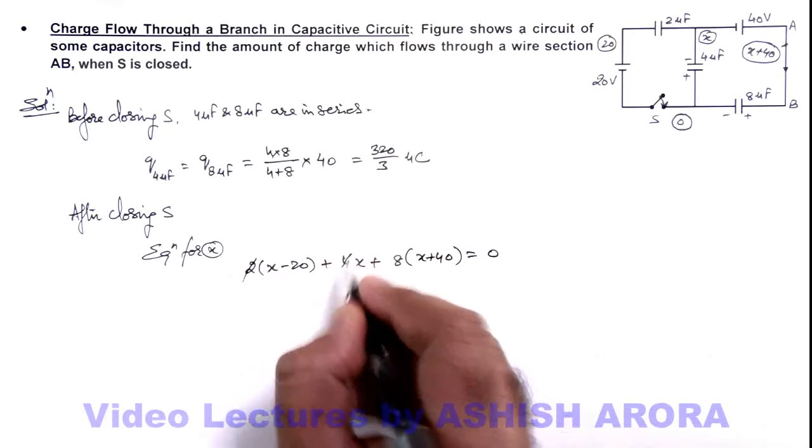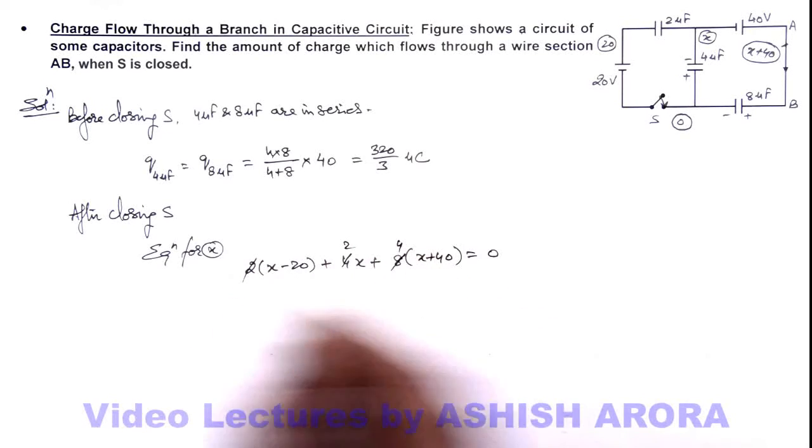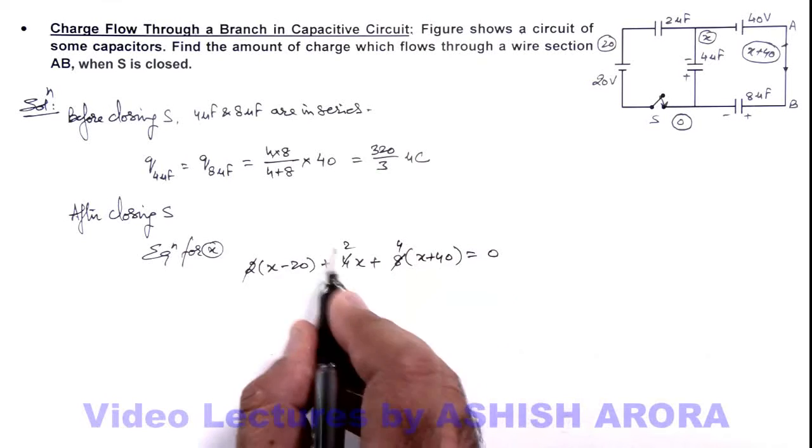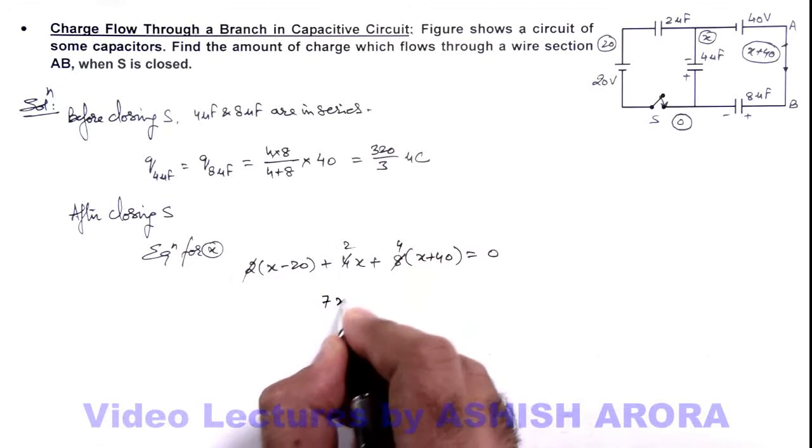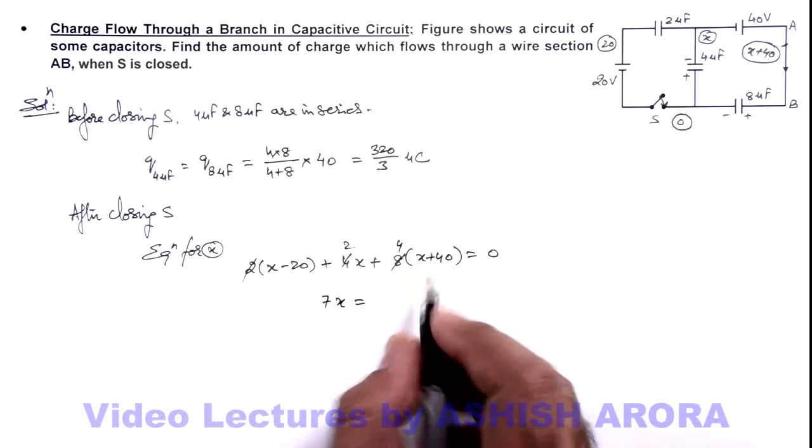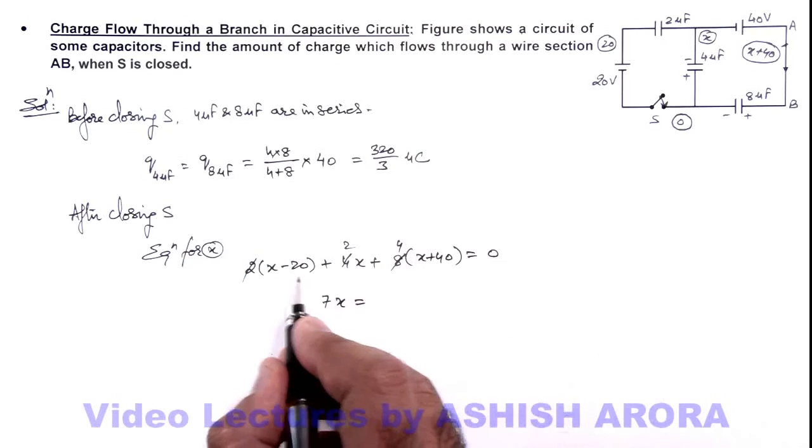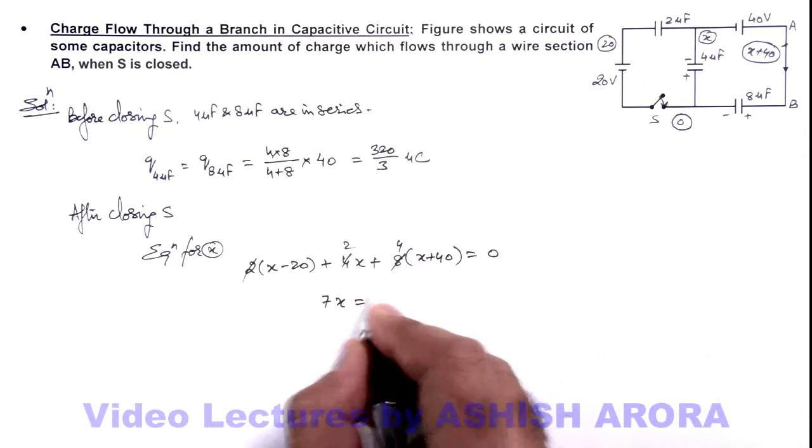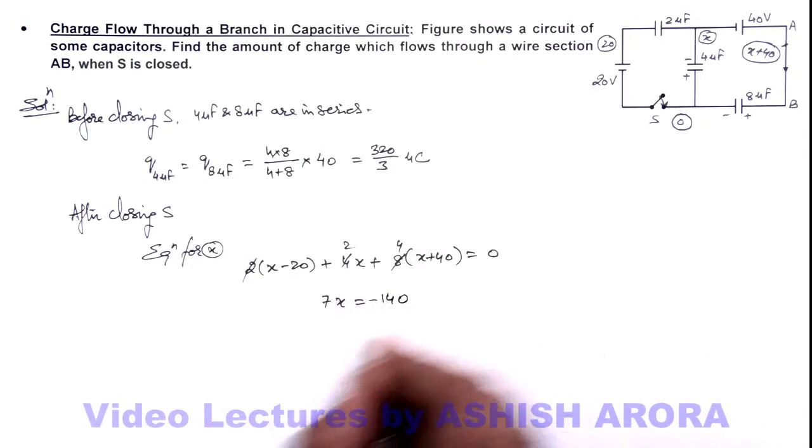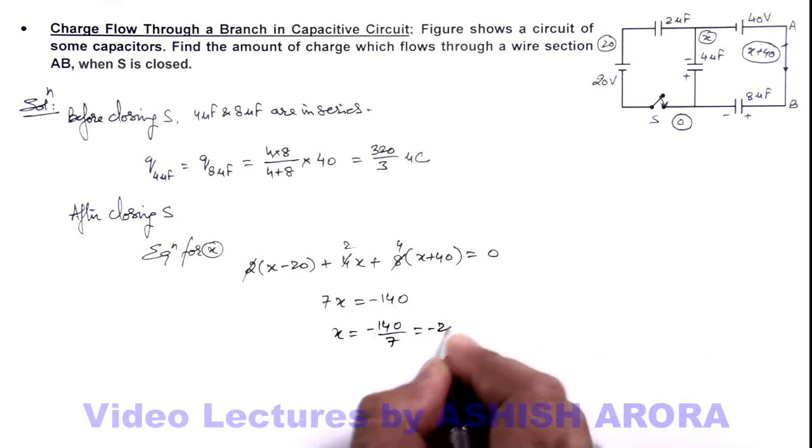Here this 2 gets cancelled out, and on simplifying we are getting 7x equals -140. So the value of x we are getting is -140/7, which is -20 volts.